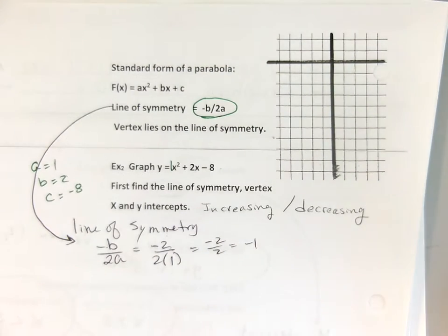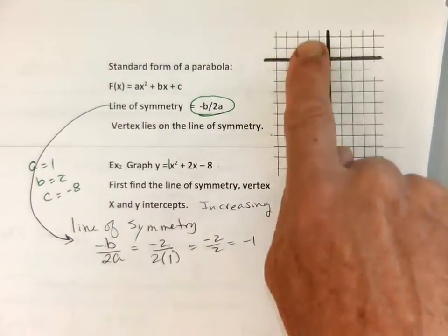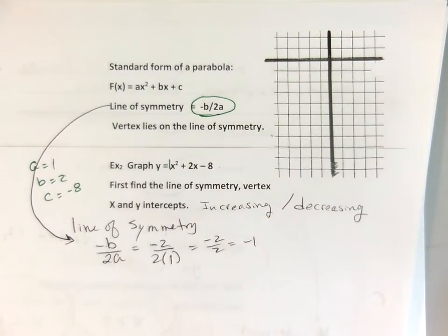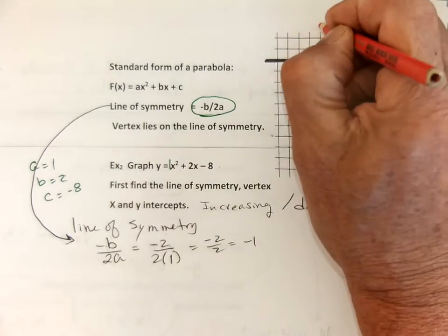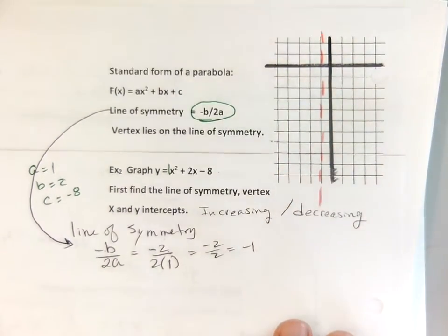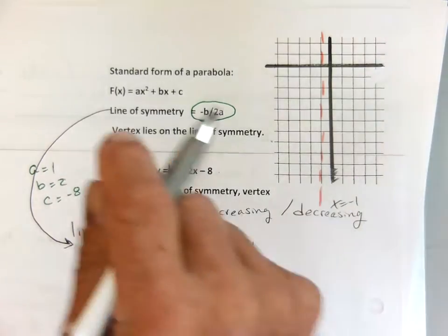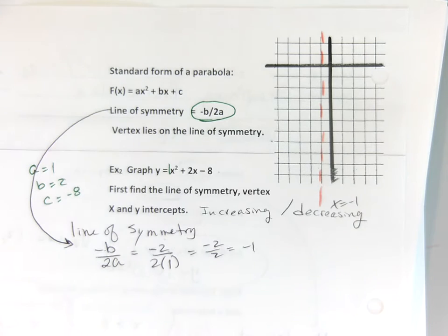That is the line of symmetry — that's my folding line. So I go to negative 1 and put my folding line right there. That's my line of symmetry at x equals negative 1. Somewhere along this line is the vertex.